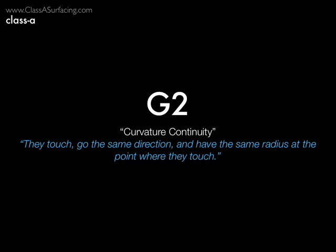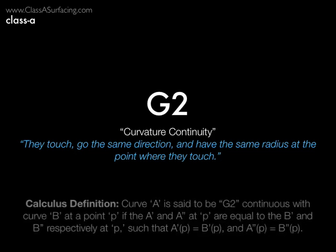G2 continuity builds on this concept by adding one more requirement. Not only do they have to go the same direction, but they also have to have the same radius where they meet. In calculus, this means that both the first and second derivatives of the two equations are equal at that point. Curves C and R are curvature continuous — G2 continuous — because they share not only curve A's direction but its radius at point P. The radius can change afterwards, but at point P the radii are equal.